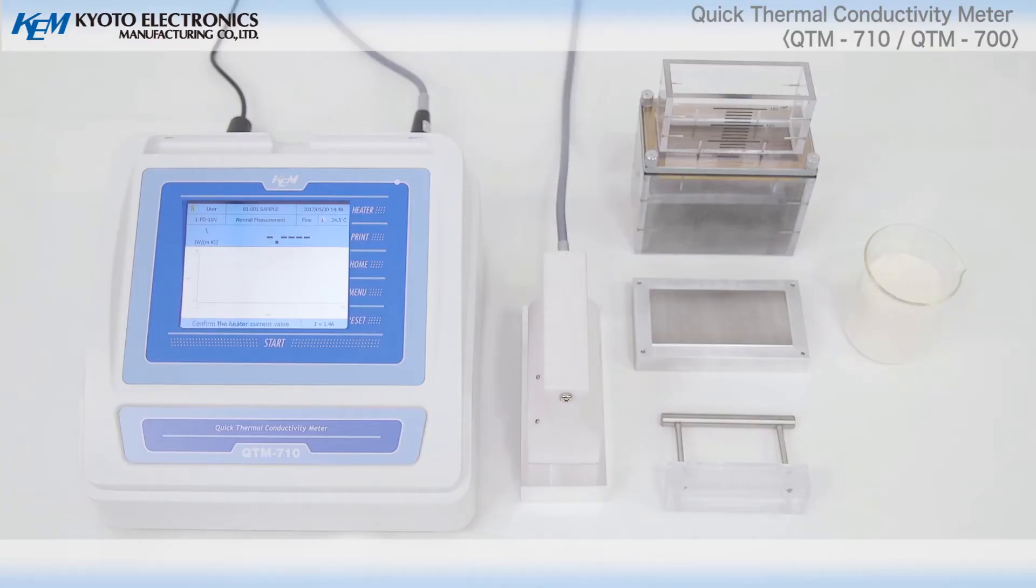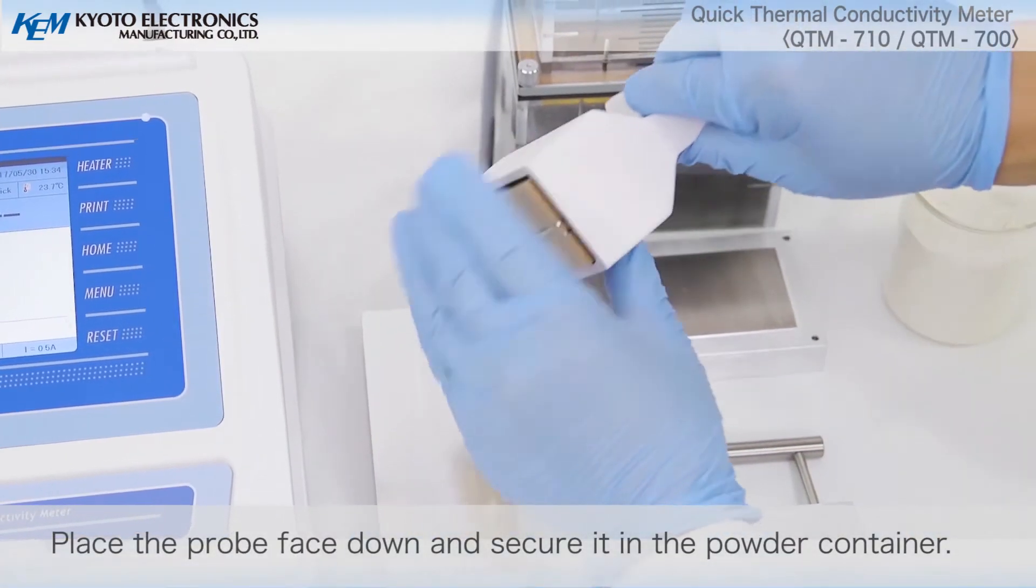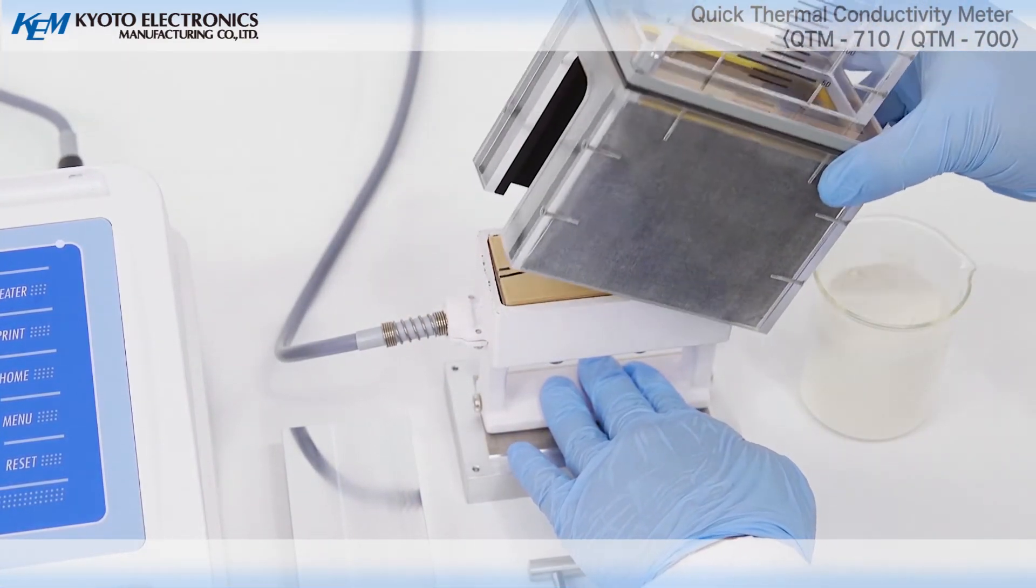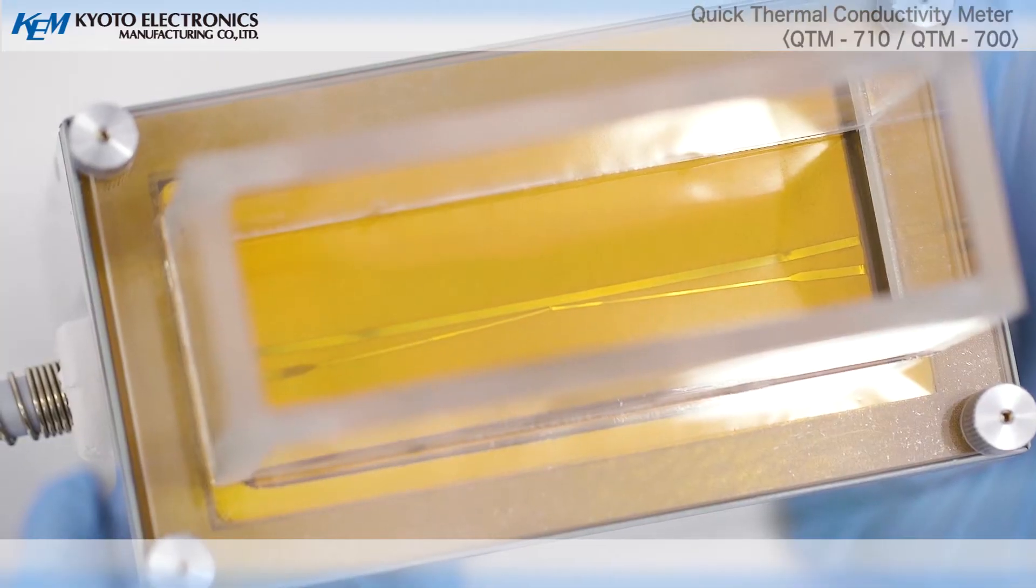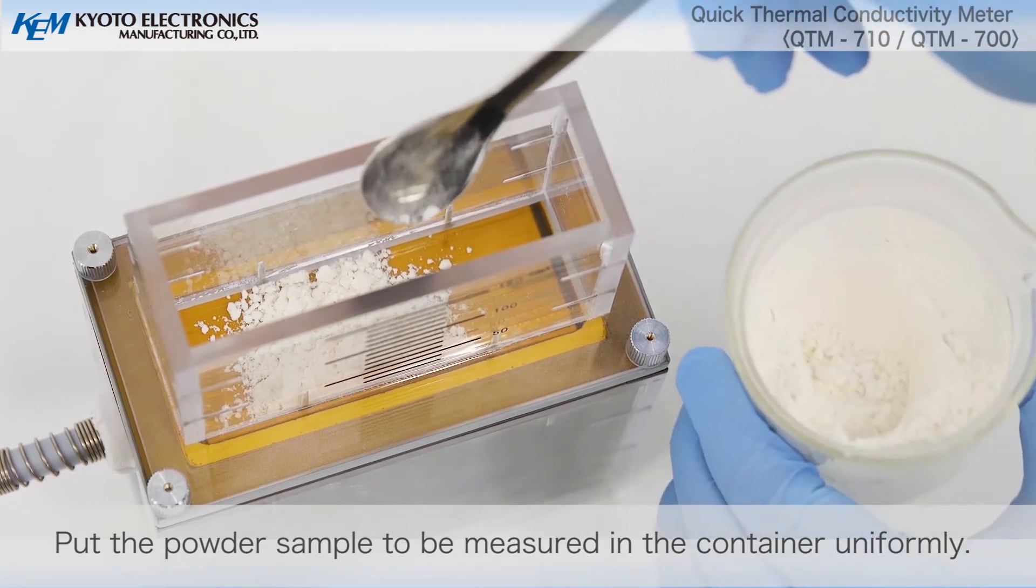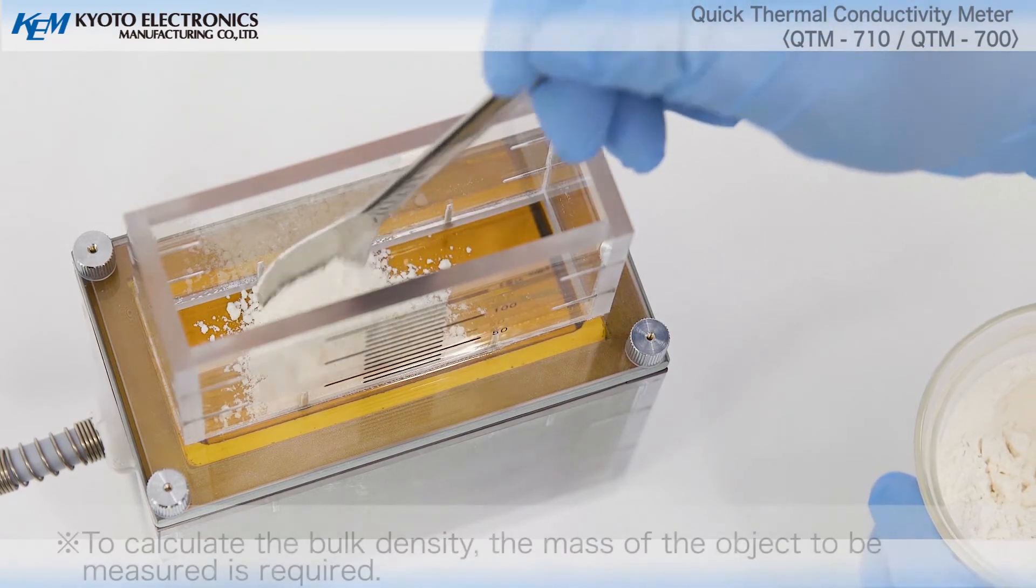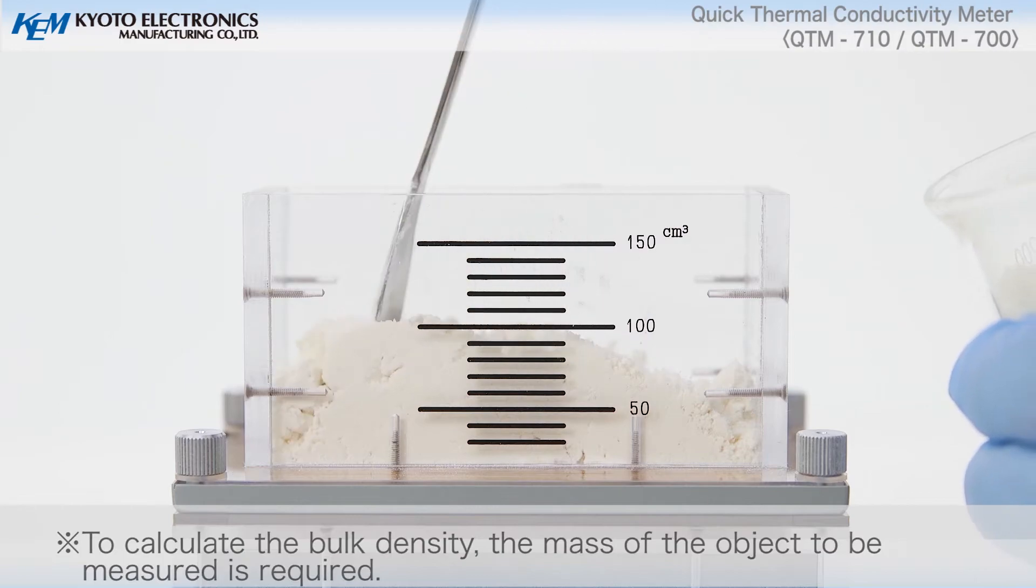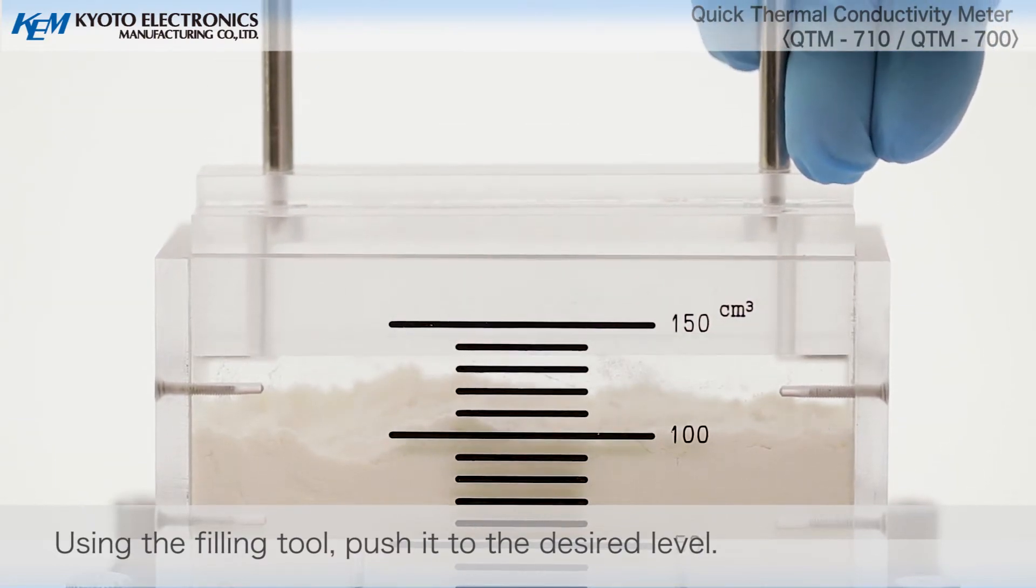Assemble the powder container. Place the probe face down and secure it in the powder container. Put the powder sample to be measured in the container uniformly. Using the filling tool, push it to the desired level.